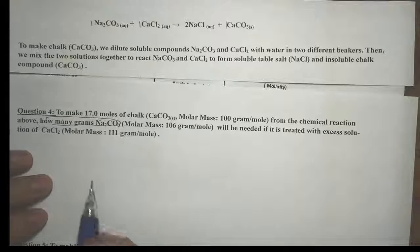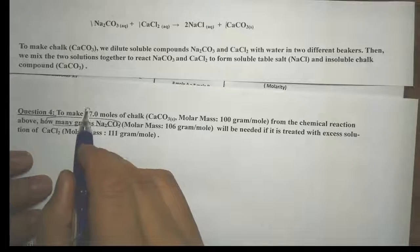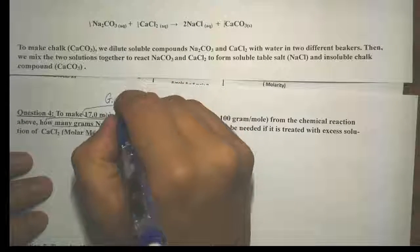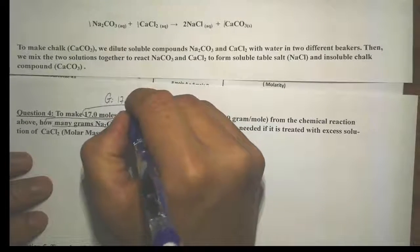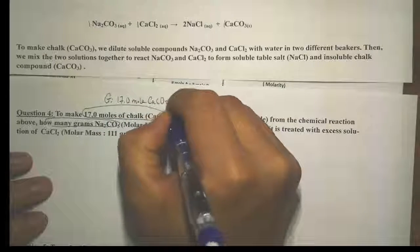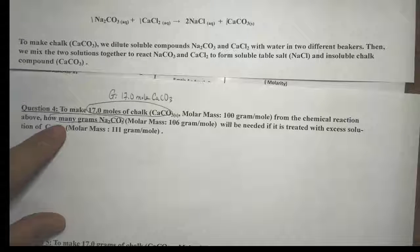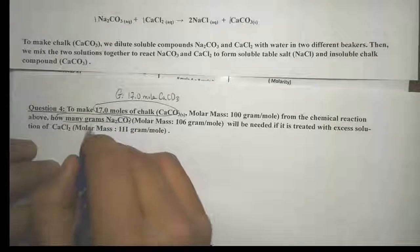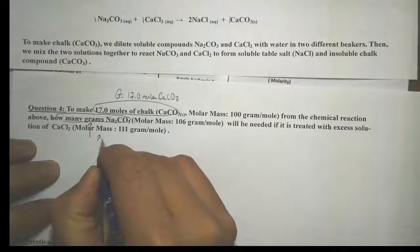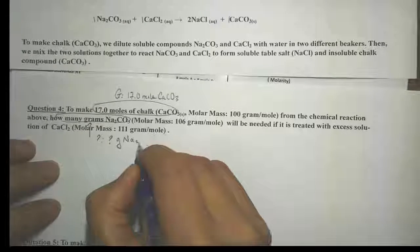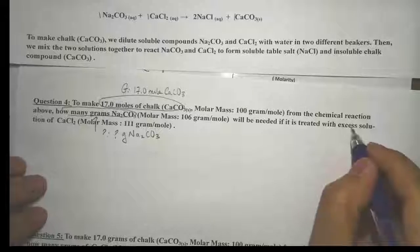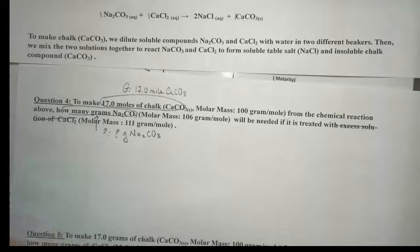If we look at this problem, notice how our given is in terms of moles of chalk. We are given 17.0 moles of calcium carbonate, CaCO₃. And we are looking for how many grams of sodium carbonate are needed — that is our question mark, grams of Na₂CO₃. We can ignore the excess calcium chloride, because excess does not determine how much product we make.